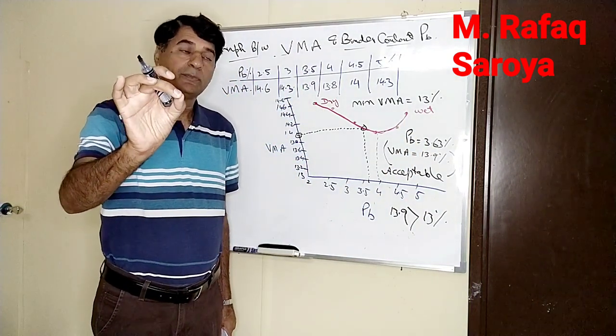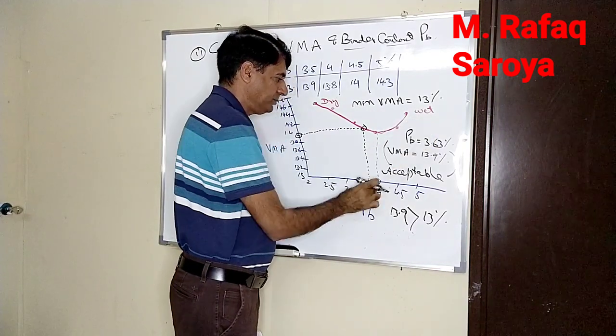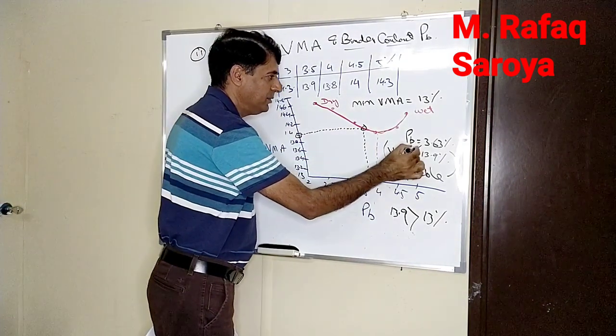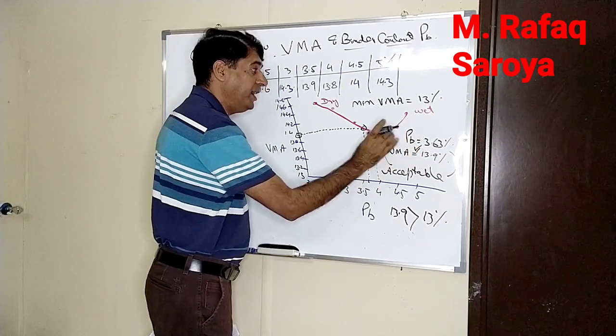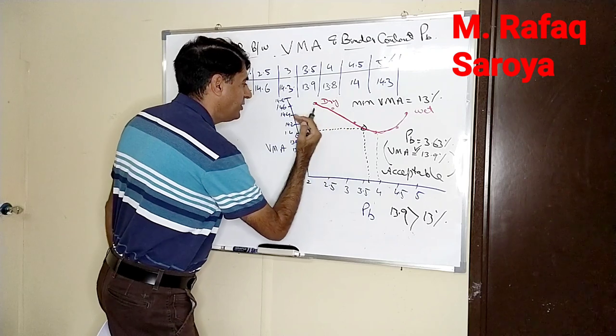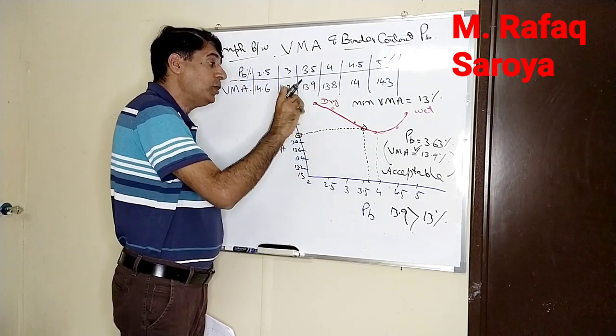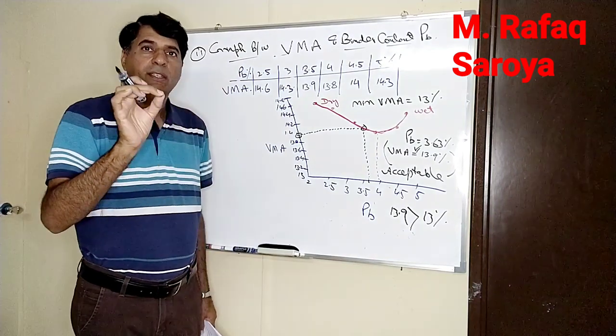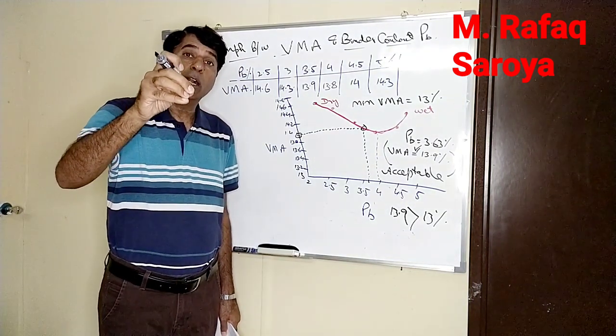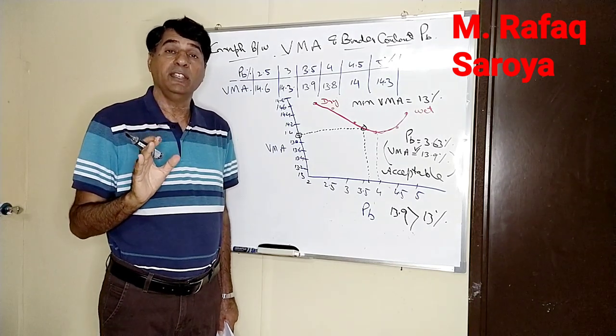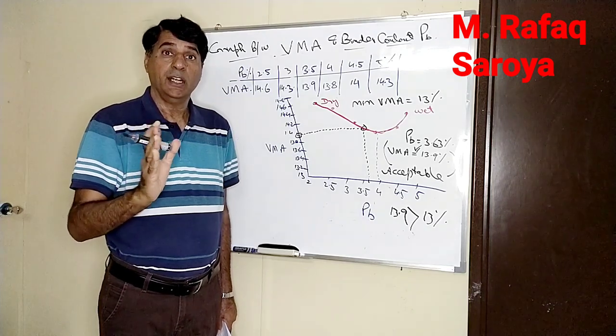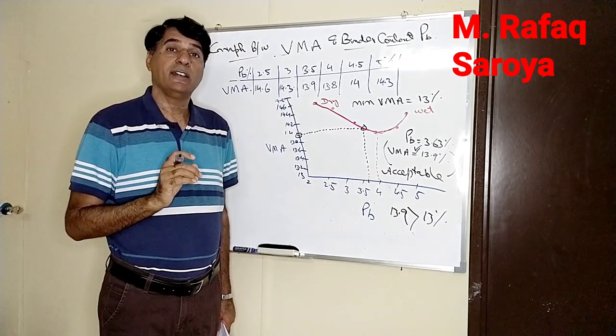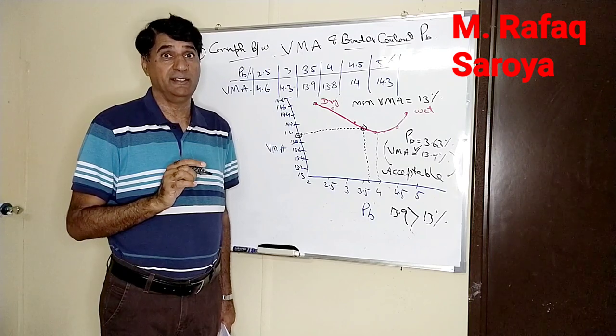Let me tell you again: we are using the binder content, and from this binder content we are going to find out the value of the VMA, which I have written over here. Now this VMA should have to satisfy two conditions. First of all, it should be on the dry side. Second, it should be greater than the minimum value set in the technical specification - that minimum value is 13. It means this binder content is going to satisfy all the technical parameters for the requirement of the VMA. Hence we can say that up to this stage, our binder content is being accepted as our selected binder content for the development of the mix design.